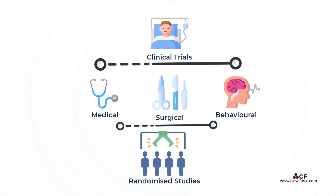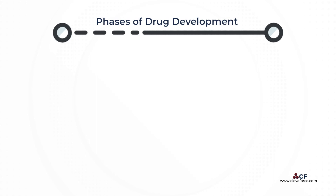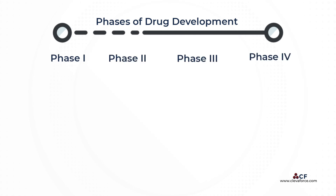In drug development, there are four distinct phases of clinical trials: Phase One, Phase Two, Phase Three, and Phase Four, which is usually called post-marketing trials or real-world evidence. These will be further explored in the next video.